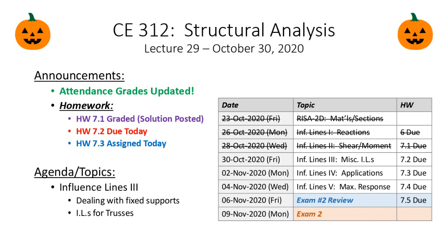Quick housekeeping: I'm going to assign section 7.3 today. Monday we covered reactions for influence lines, Wednesday we covered influence lines for shear and moment. Today I want to talk about a topic I deliberately held back to ease you into influence lines - specifically how influence lines change when you have a fixed support with a vertical reaction and a moment reaction.